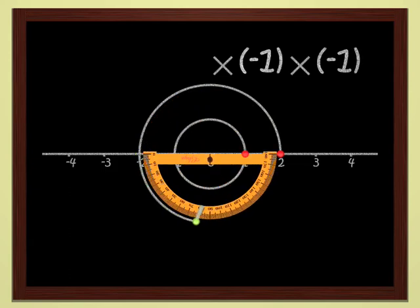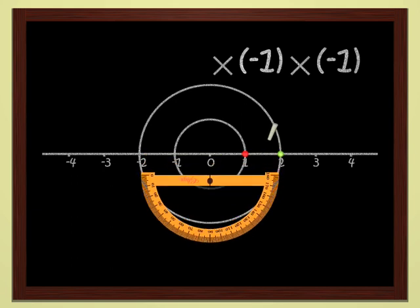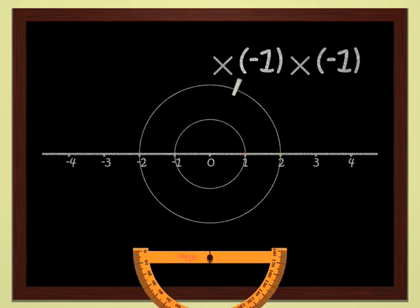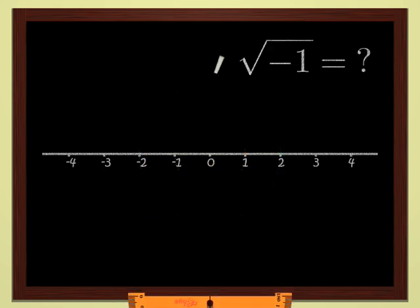Therefore, there is no number which, multiplied by itself, yields minus one. Another way of saying this is that minus one has no square root.